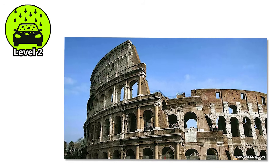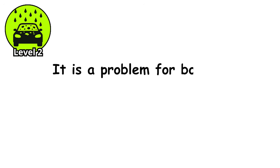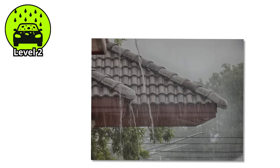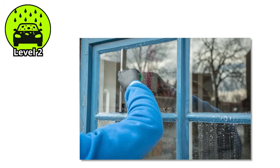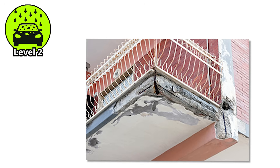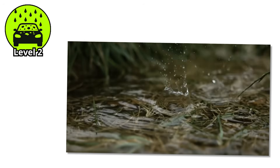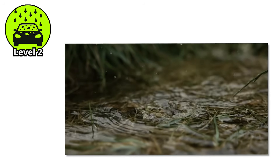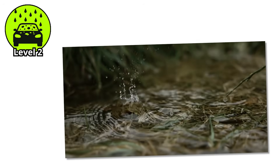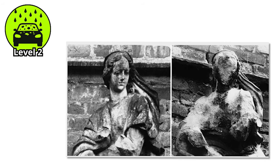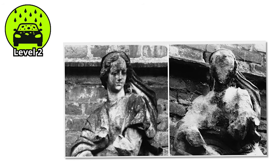Now it is not just a problem for buildings — it is a problem for bodies. You walk outside and it seems like nothing is wrong. But year by year, your roof gets thinner, your windows pit, your balconies corrode. What rain doesn't touch directly, the runoff does. It is death by drizzle — slow enough to ignore, persistent enough to bankrupt a city. And yet this level is still not considered dangerous for direct human exposure. That changes soon.